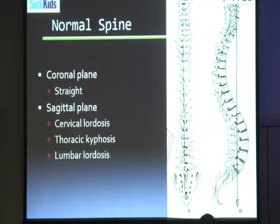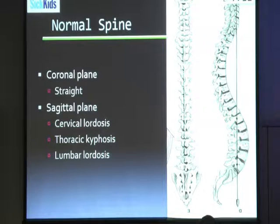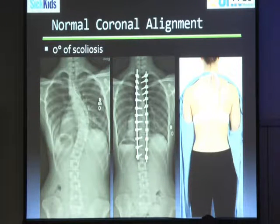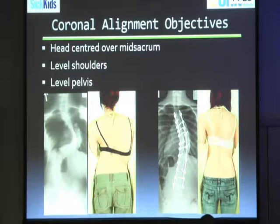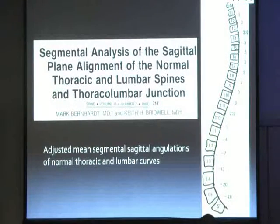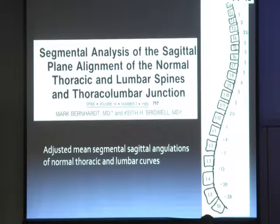On the coronal plane we're looking at a straight spine, and on the sagittal there's a lot more confusion: there's cervical lordosis, there's thoracic kyphosis, and there's lumbar lordosis. We generally try to get the scoliosis as close to zero as possible, but our objectives are really to have a head centered over the pelvis with level shoulders and a level pelvis. This is one of the key articles that helps us understand normal anatomy — minus is lordosis and plus is kyphosis.